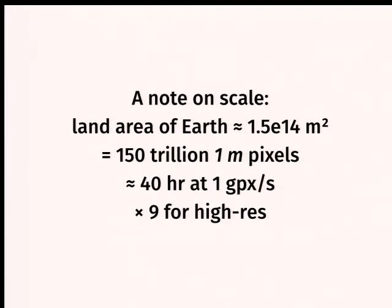One of the themes here is going to be scale. When we talk about doing something, we mean doing it often to the entire world. Earth has 1.5 × 10^14 square meters of land — that's 150 trillion one-meter pixels. The continental US alone is 8 trillion one-meter pixels. If you can process at one gigapixel per second, that's going to take you 40 hours. One gigapixel per second is 3 gigabytes of 8-bit TIFF per second, which is about as fast as a typical disk can read — that's a work week on a single core. And if you go down to quarter-meter or 30-centimeter resolution, times nine. And that's to do nothing — if you want to do something more sophisticated, that just multiplies out.